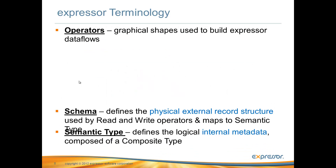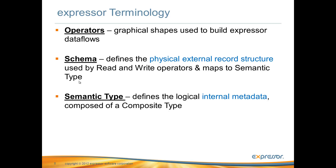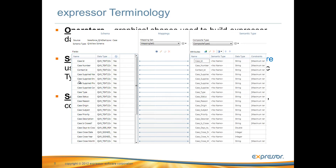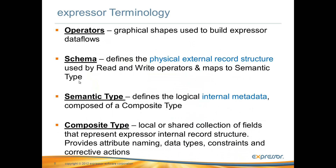The next two terms are schema and semantic type. A schema is used within read and write operators. It defines the physical external record structure of tables, files, and other data sources that will be mapped to a logical internal semantic type. A semantic type simply defines the logical internal metadata, or meaning, to the Expressor data flow. It is composed of an artifact known as a composite type. A composite type is an artifact of a semantic type, defined within schemas. They can be local to an operator or shared with others.